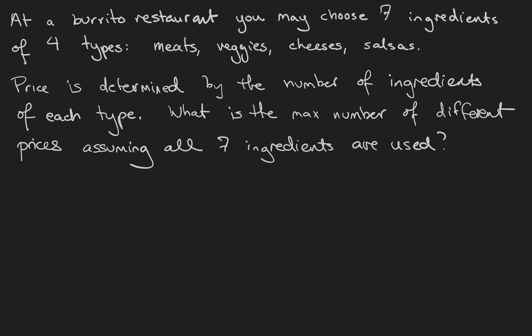Here's an example. At a burrito restaurant, you may choose seven ingredients of four different types: meats, veggies, cheeses, and sauces. Price is determined by the number of ingredients of each type, but not which particular ingredients you get or what order they're in. What is the maximum number of different prices that a seven ingredient burrito could be?